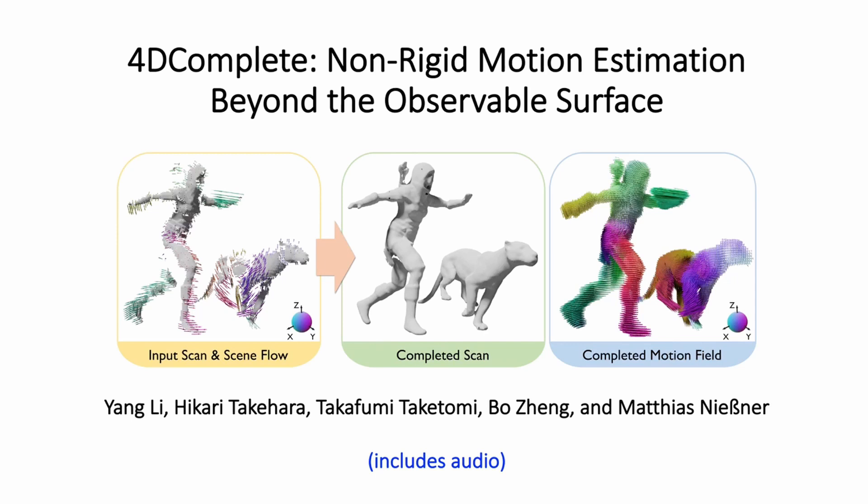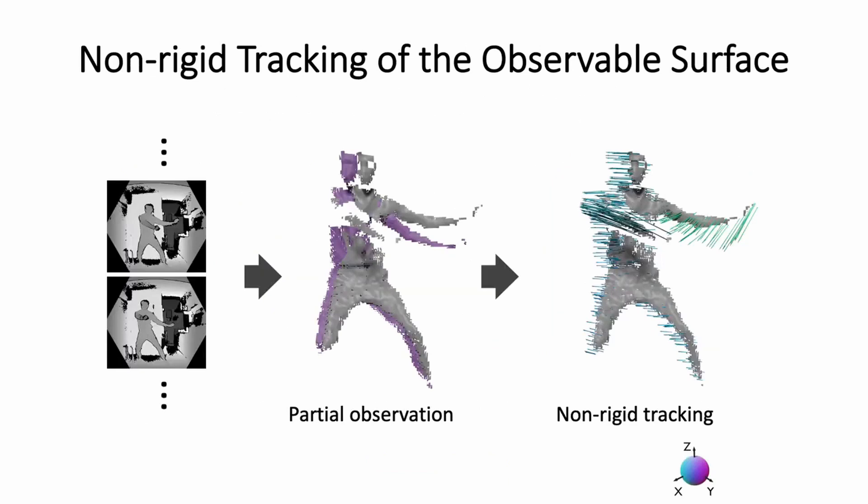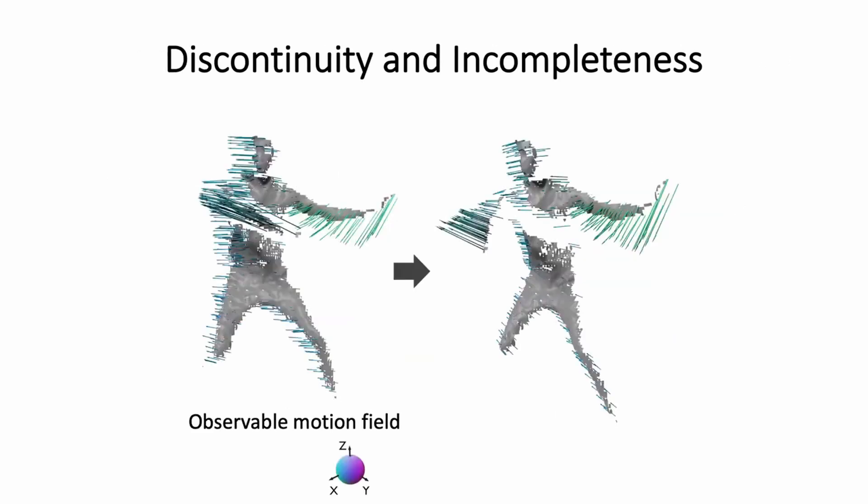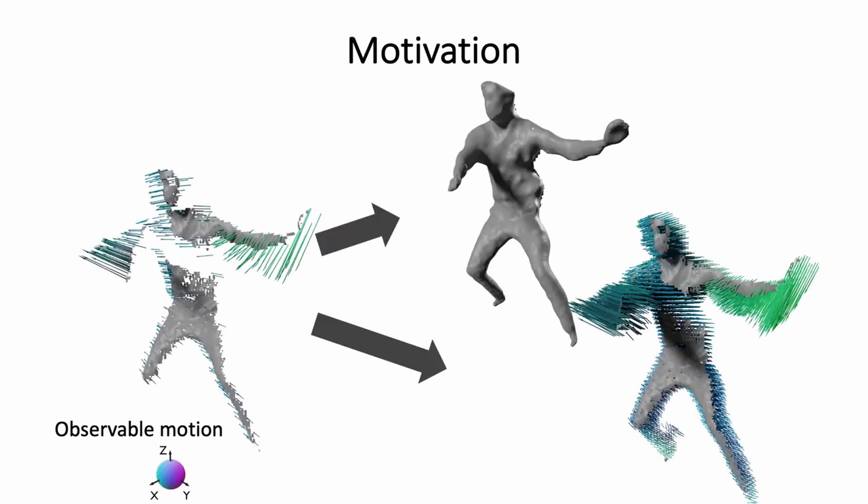We present 4D-complete, non-rigid motion estimation beyond the observable surface. Given a depth sequence of a deforming scene, the inter-frame motion can be determined by non-rigid tracking algorithms. However, due to occlusions and limitations of range sensors, existing tracking methods only handle the visible surface. This causes discontinuity and incompleteness in the motion field. How can we estimate the motion of occluded regions?